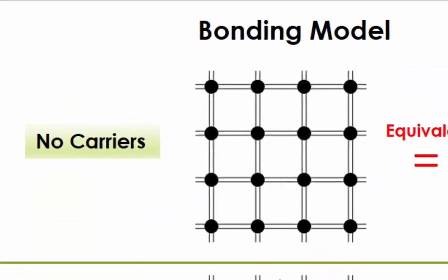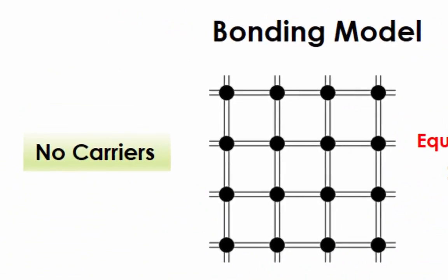Carriers are the entities in a semiconductor that can carry electric current. Let's refer back to the bonding model. If there are no broken bonds, all valence electrons are locked to their position and could not carry electric current.